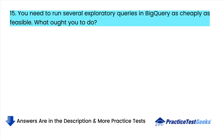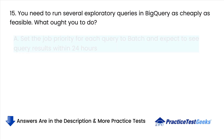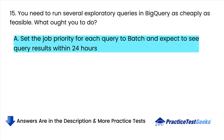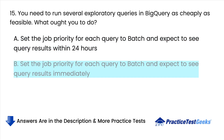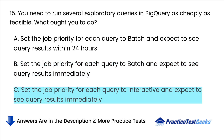You need to run several exploratory queries in BigQuery as cheaply as feasible. What ought you to do? A. Set the job priority for each query to batch and expect to see query results immediately. C. Set the job priority for each query to interactive and expect to see query results immediately.